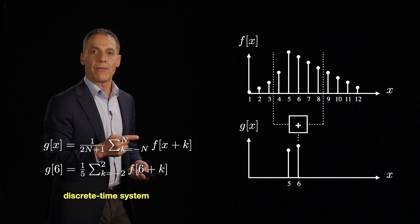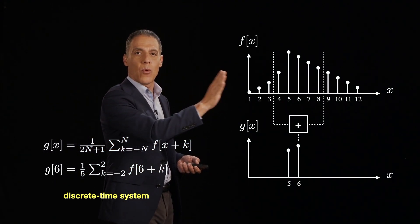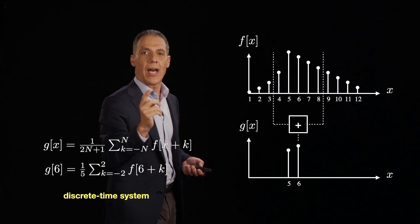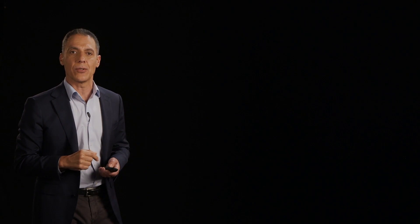So here's the next one. If I want to know g of six, well, I go back up to here. I take the sum from four, five, six, seven and eight. I divide by five and I've got a running average of the two.